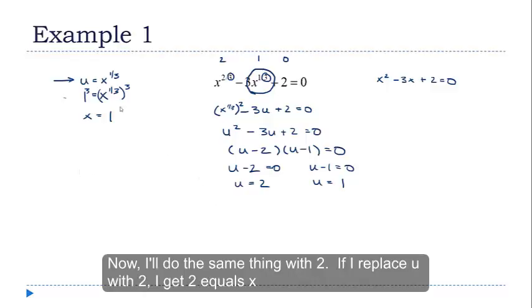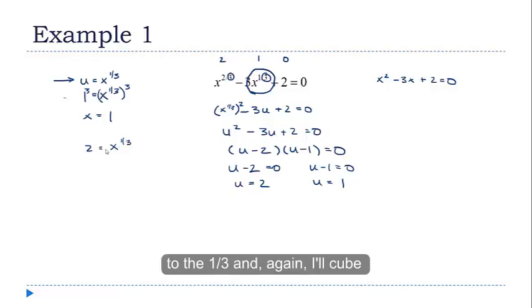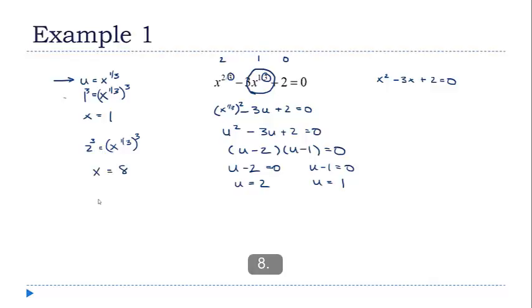And now I'll do the same thing with 2. If I replace the u with 2, I get 2 equals x to the 1 third. And again, I'll cube both sides. And this gives me x equals 8. So x equals 1 or 8 are my two solutions.